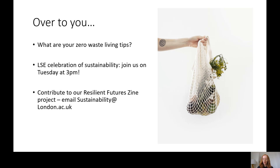That was a brief overview — yesterday's webinar had great discussion of people's own tips. Someone mentioned saving food scraps like onion skins, garlic skins, and broccoli ends in the freezer and then once a week turning them into vegetable stock by boiling with salt — a really fantastic, very zero waste idea that also saves money on buying ingredients. Someone else mentioned blending vegetable scraps, adding breadcrumbs and egg, and baking them in the oven into delicious patties.